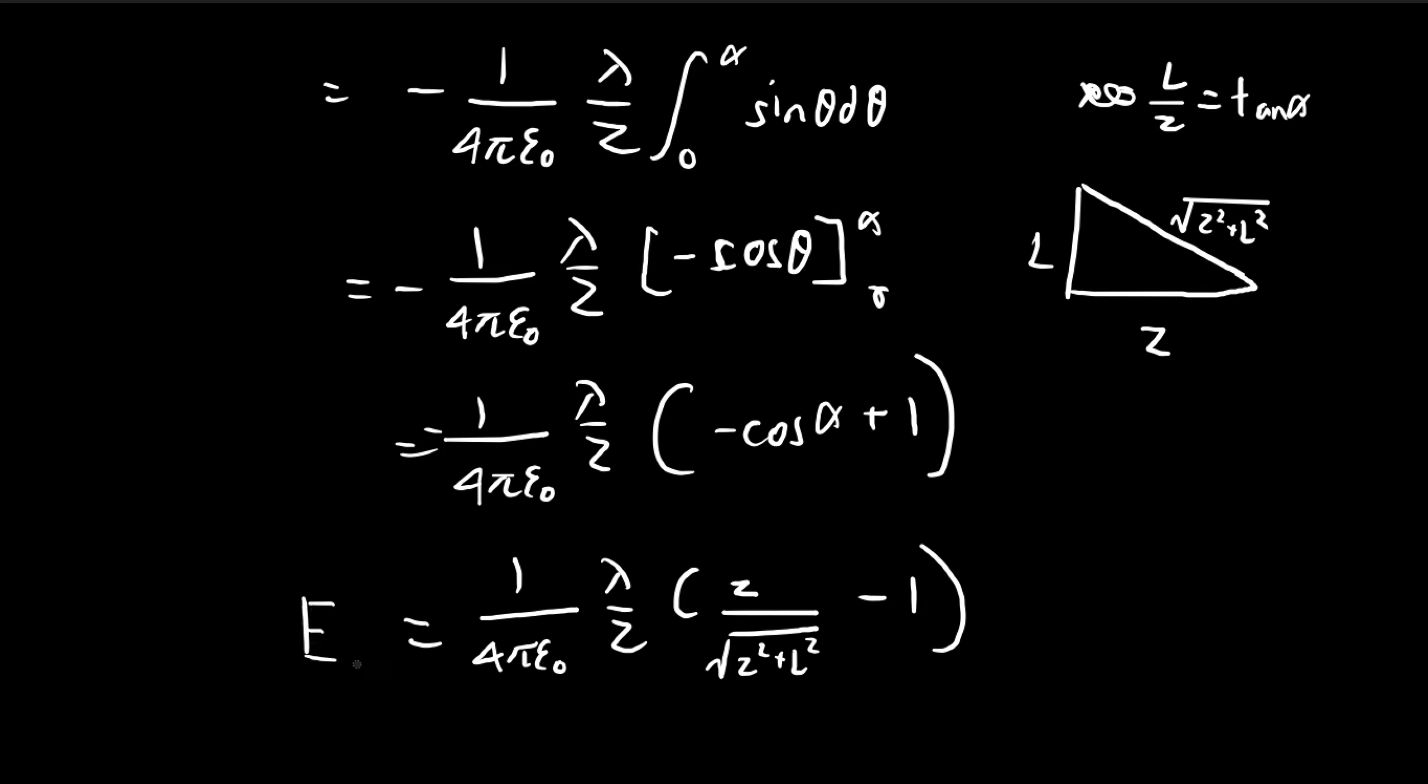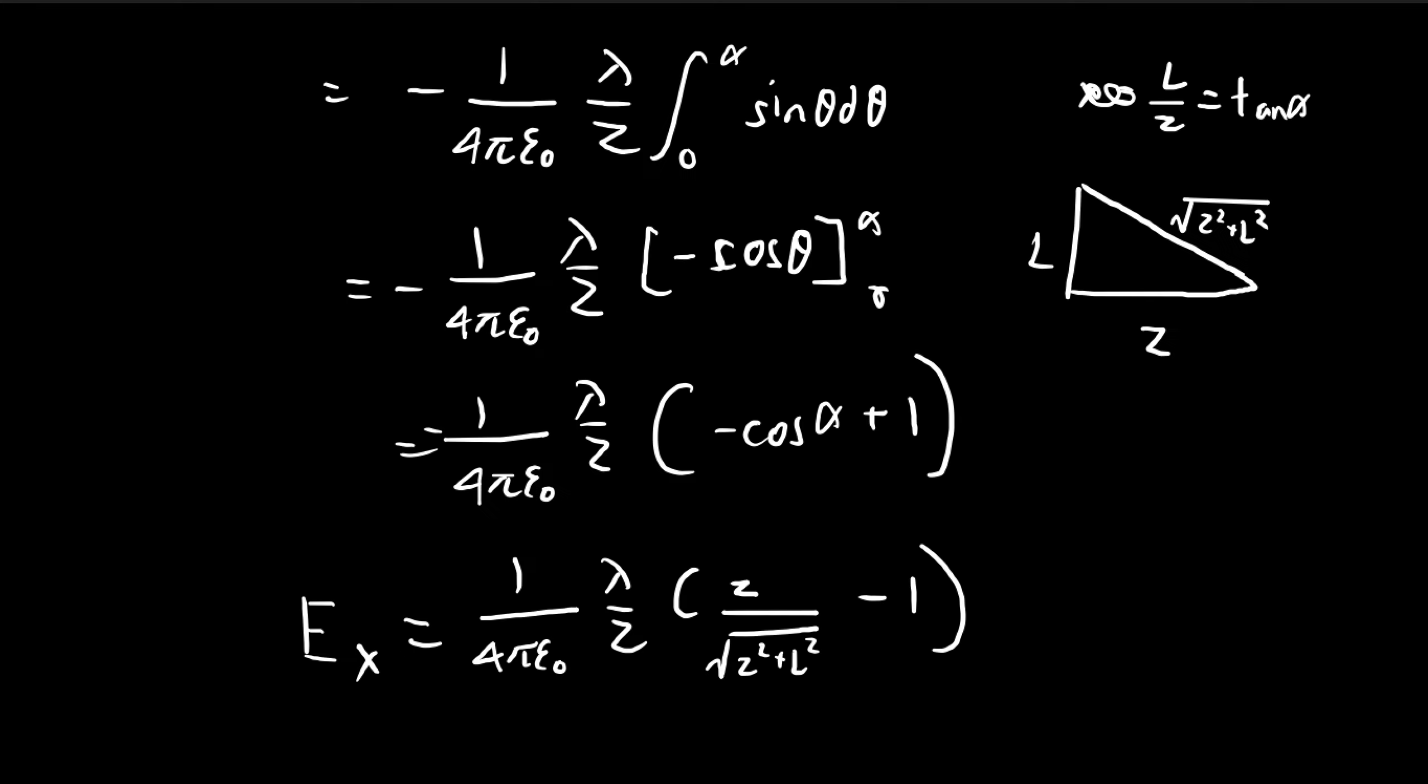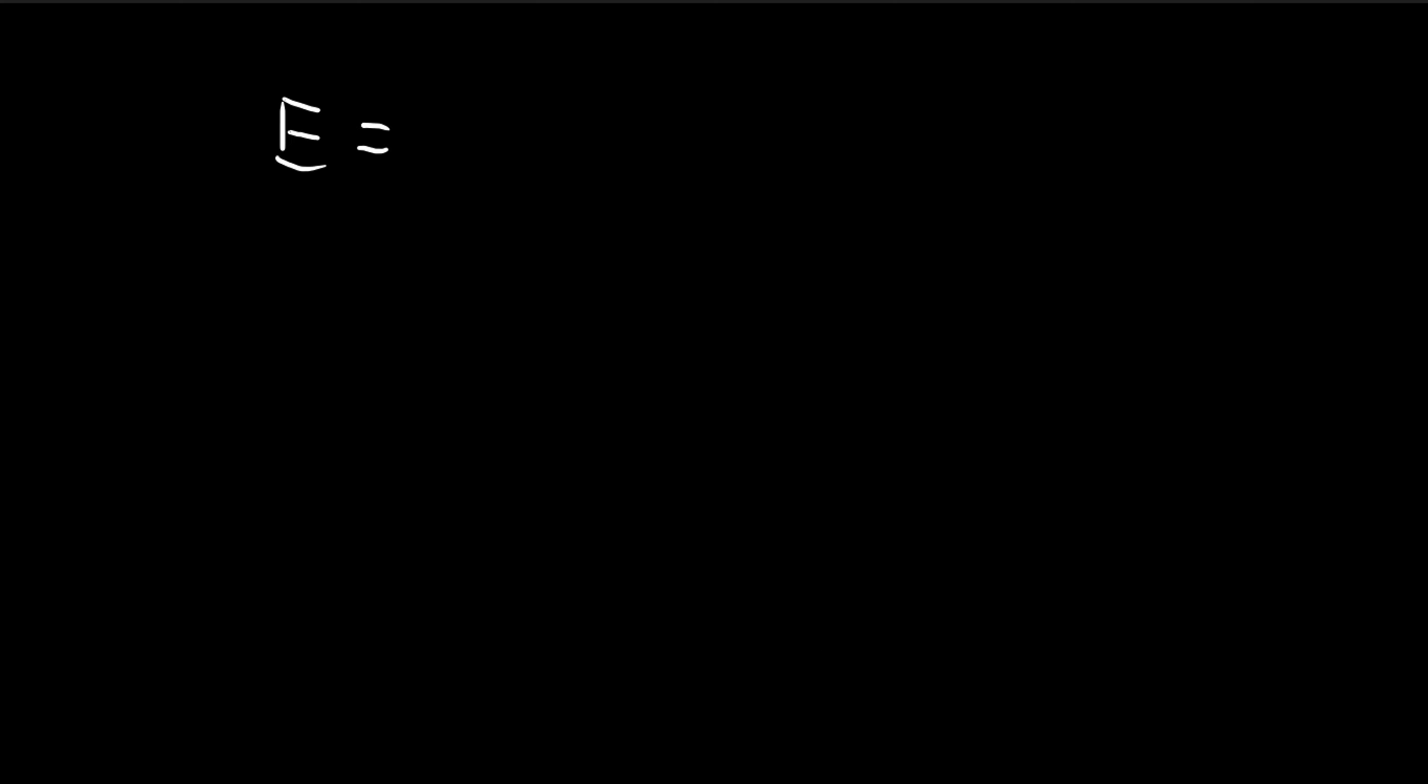And so there we have it. This is the electric field in the x direction. And so going back to the original problem, we're trying to find the electric field at the point P. So we found the horizontal and the vertical components. So for E_x, we have this expression here, minus 1.